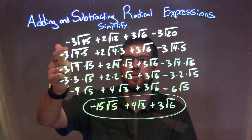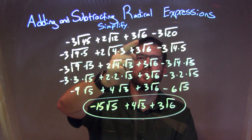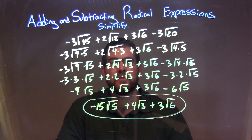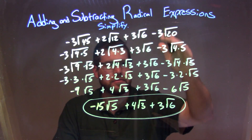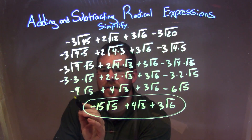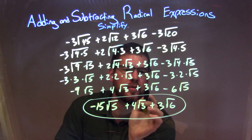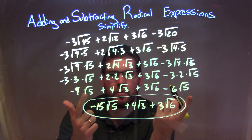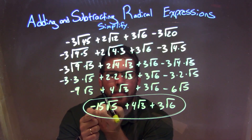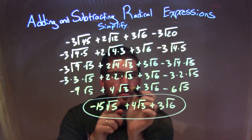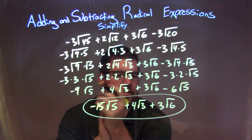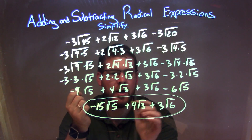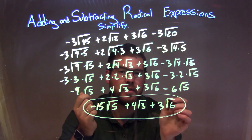So, let's recap. We're given negative 3 square root of 45 plus 2 square root of 12 plus 3 square root of 6 minus 3 square root of 20. I simplify each square root individually, and as I do that I get down to negative 9 square root of 5 plus 4 square root of 3 plus 3 square root of 6 minus 6 square root of 5. The only two with the same square root are the square root of 5 terms, so I combine them to get negative 15 square root of 5. The 4 square root of 3 and 3 square root of 6 have nothing else to combine with, so those come down as-is. My final answer is negative 15 square root of 5 plus 4 square root of 3 plus 3 square root of 6.